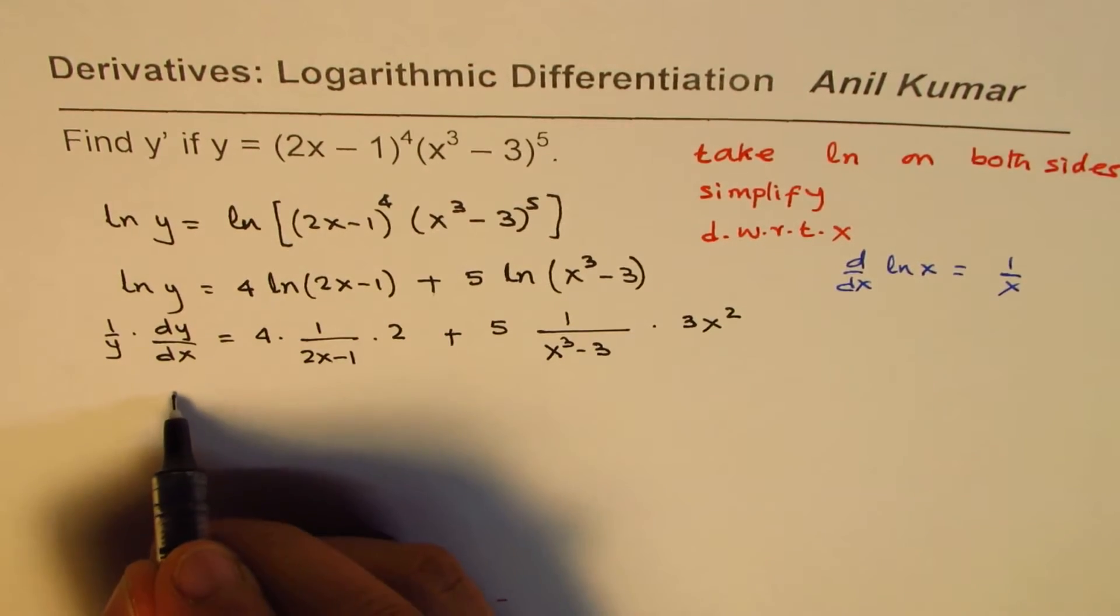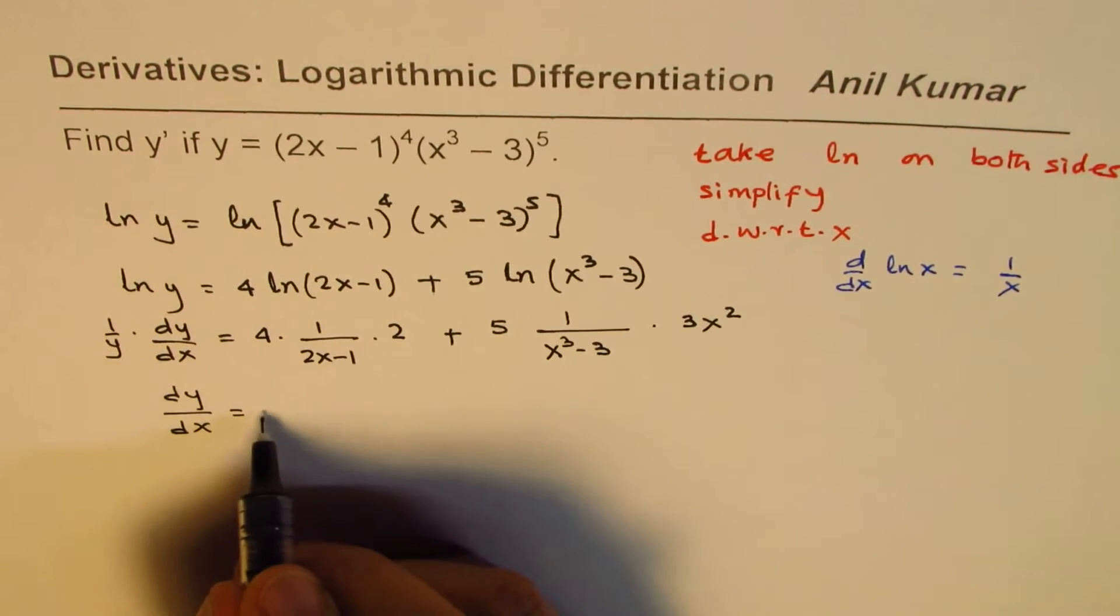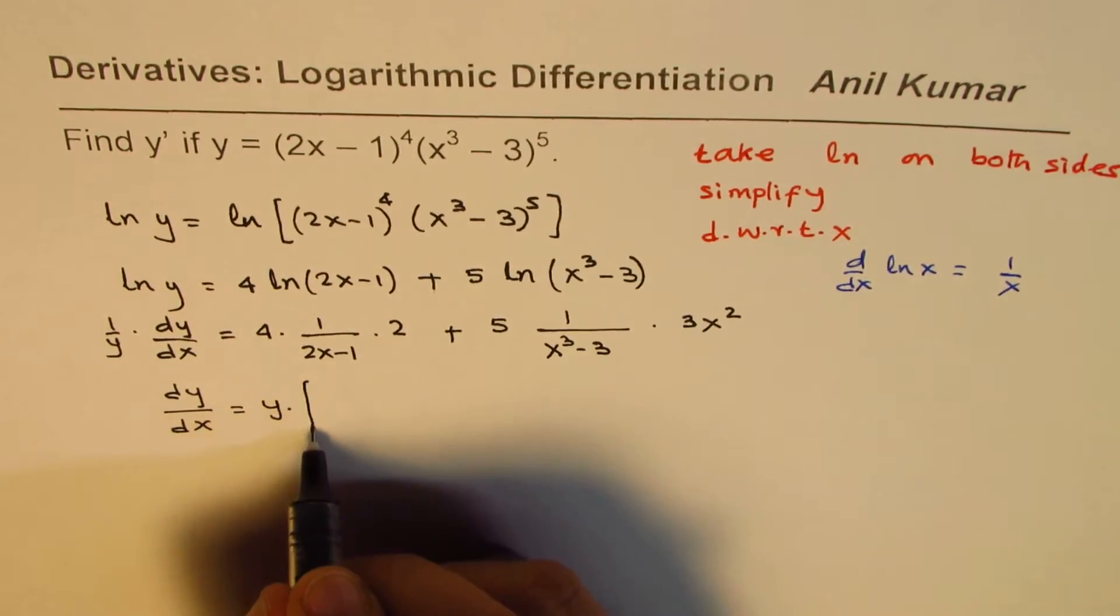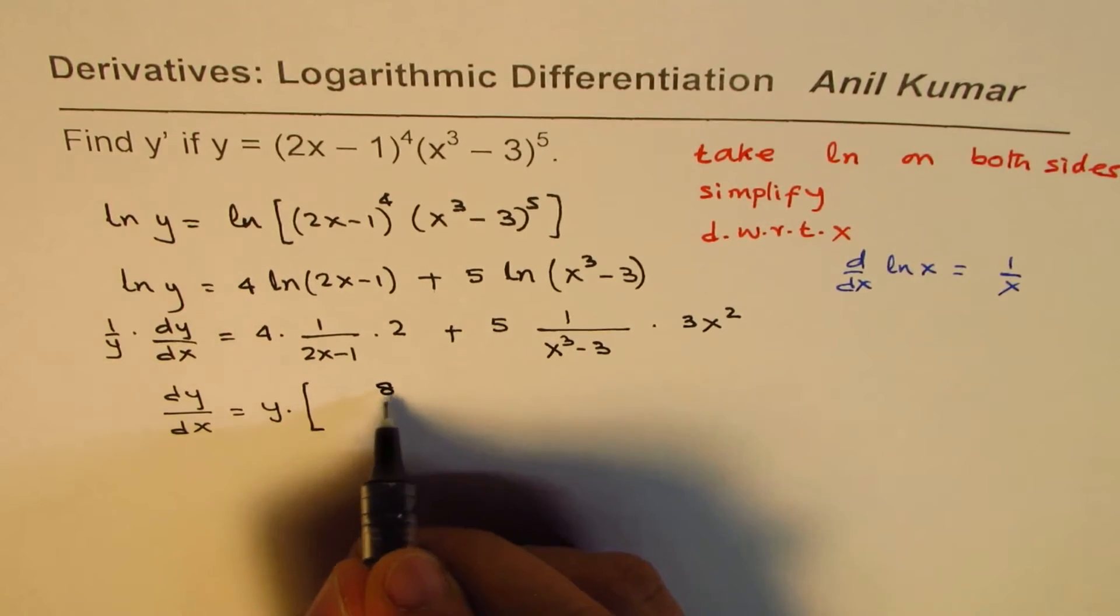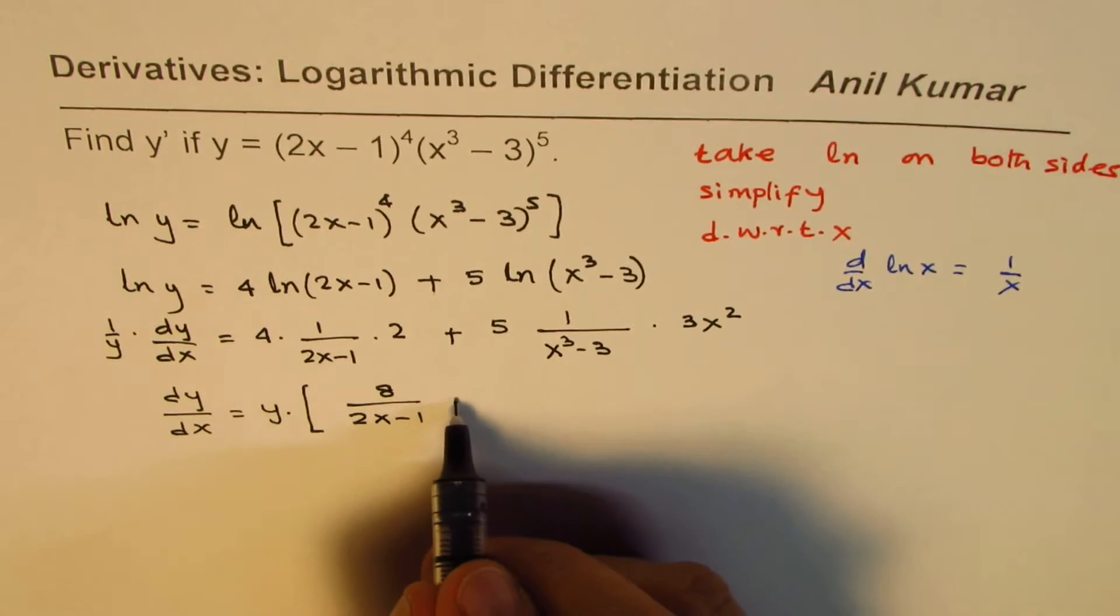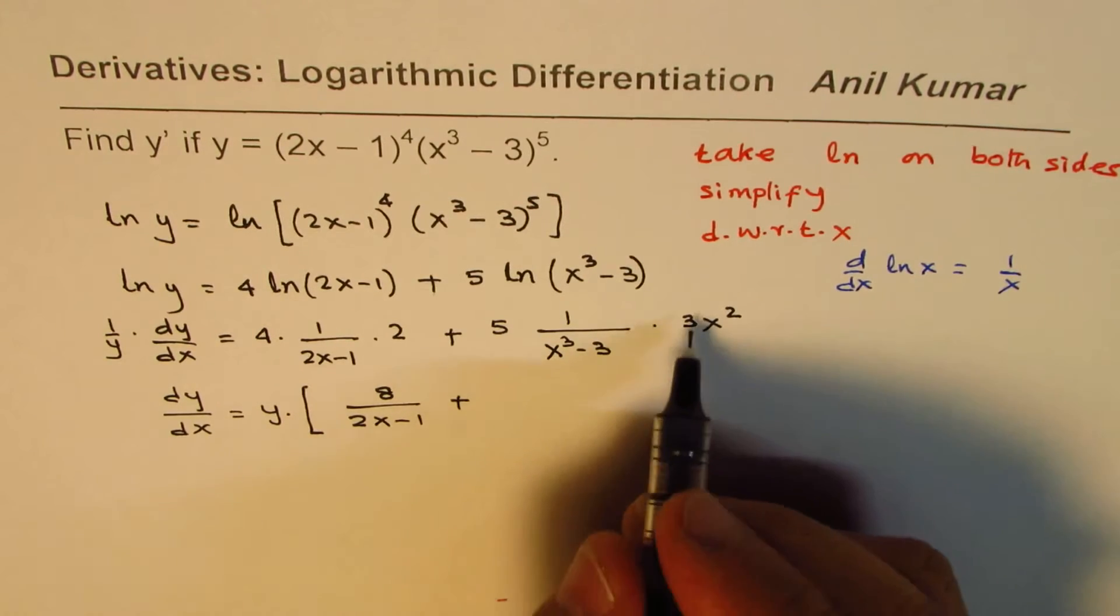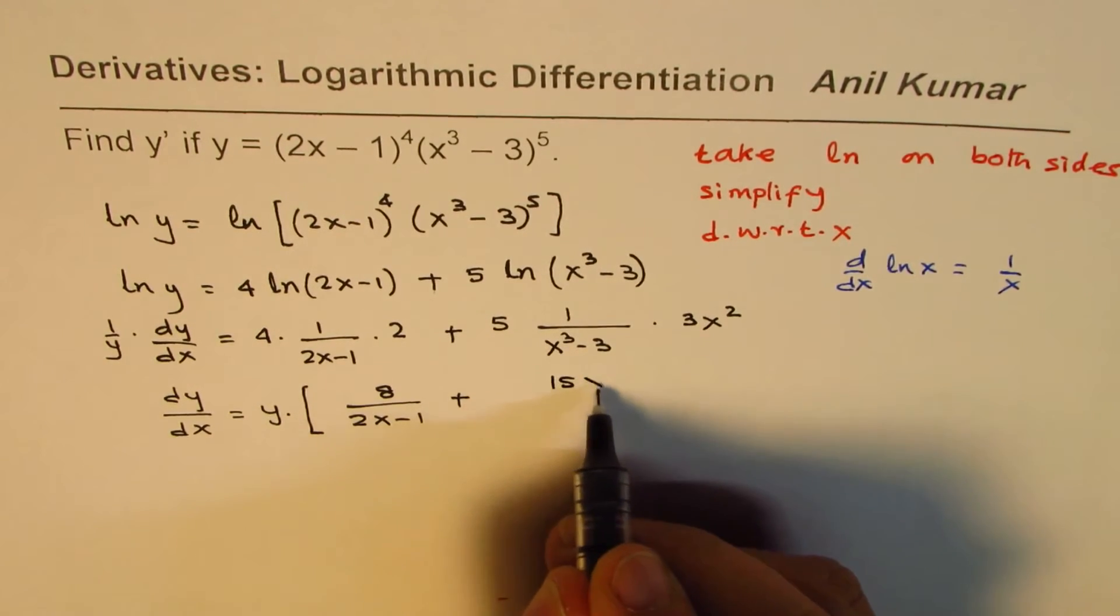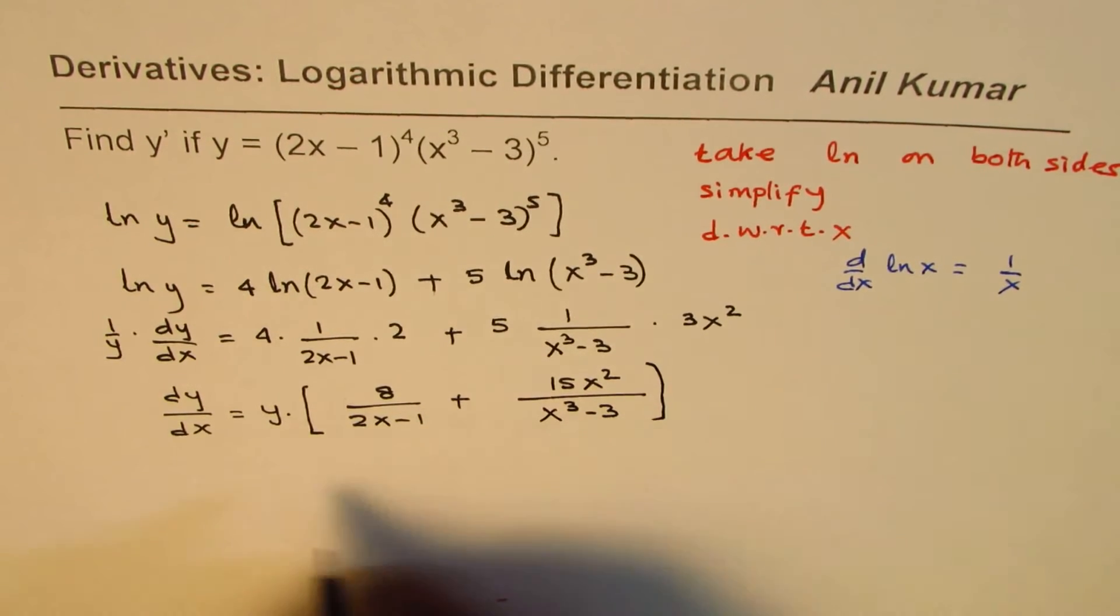Now, we can simplify this a bit. We say dy/dx equals y times, within brackets, let me write this down. 4 times 2 is 8, so we get 8/(2x - 1), plus 5 times 3 is 15, so 15x^2/(x^3 - 3).